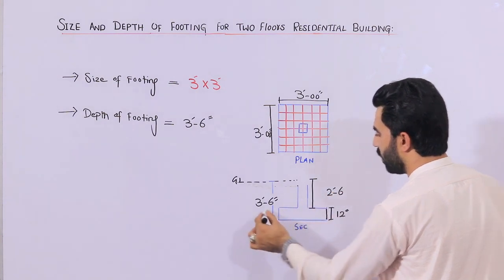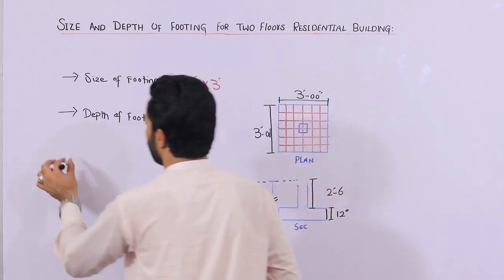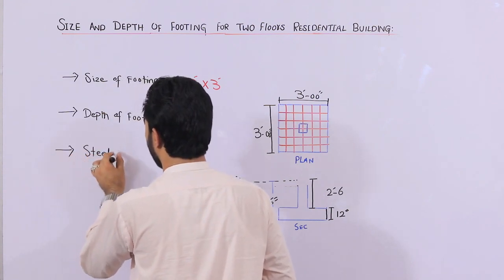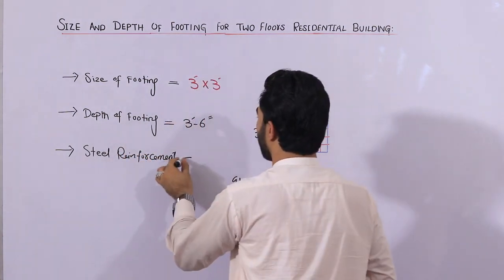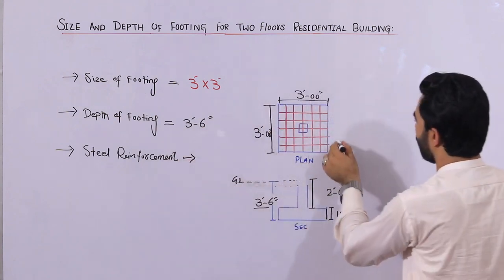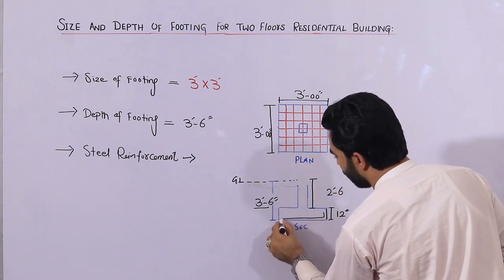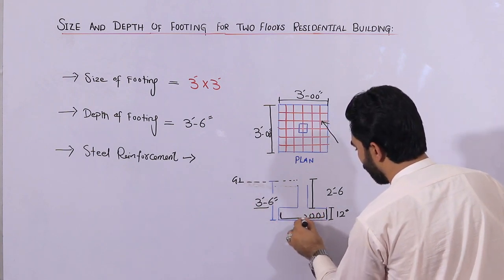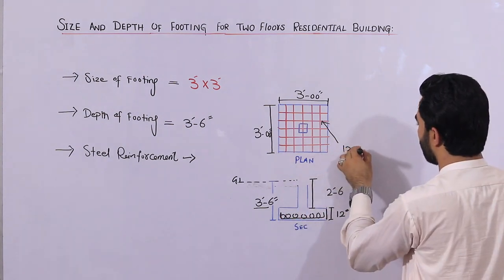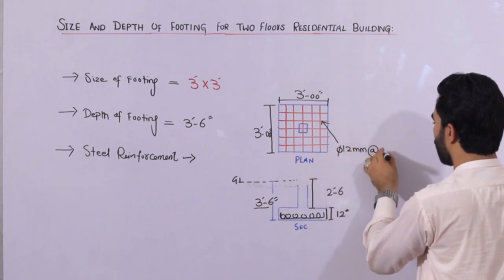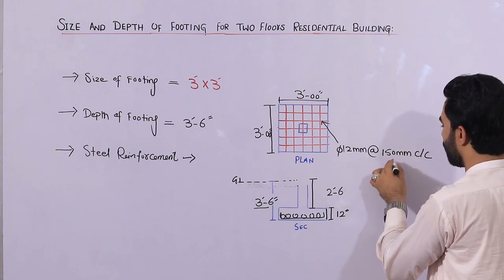That is 30 inches, so it will come to three feet and six inches total depth of footing for G plus one story. Now let me guide you for steel reinforcement. Remember guys, you can use a single mesh for G plus one story. As you can see in the section, these are the steel reinforcement bars. You can keep 12 mm diameter steel rods with a spacing of 150 mm center to center.